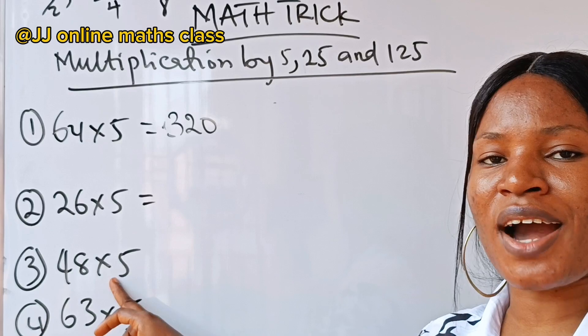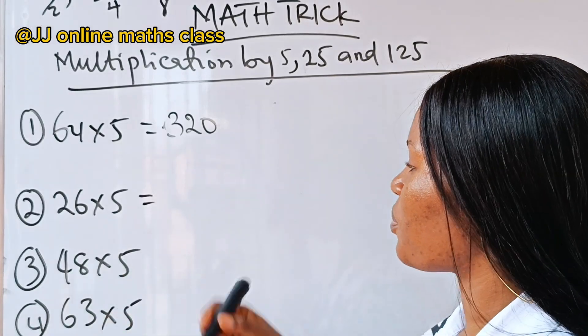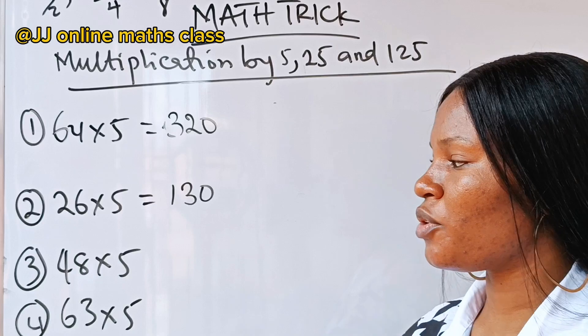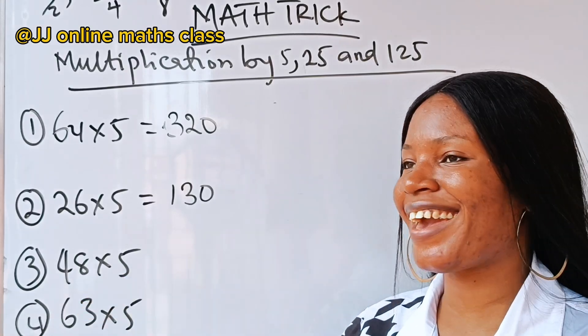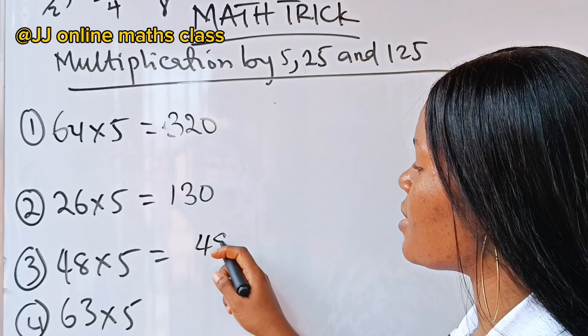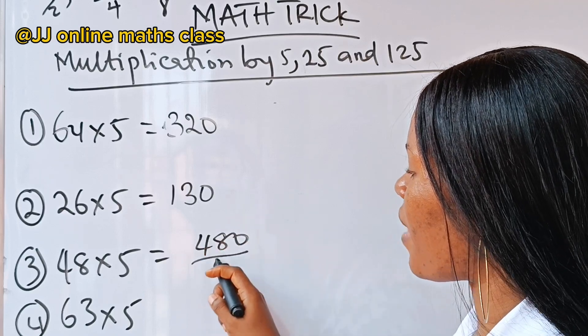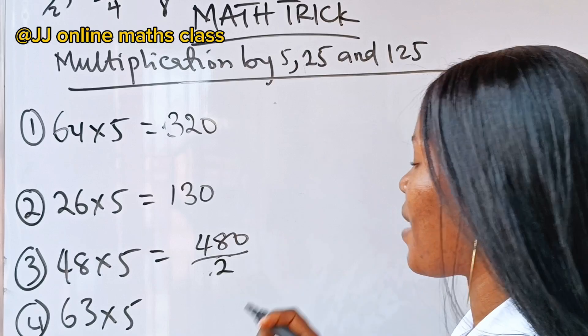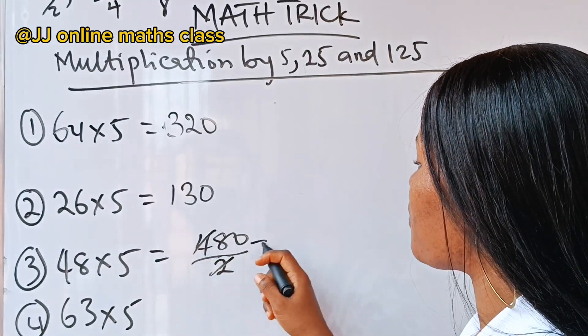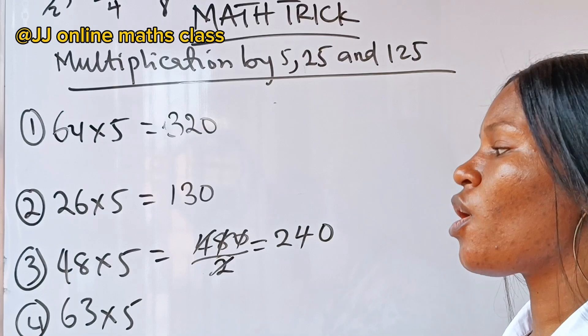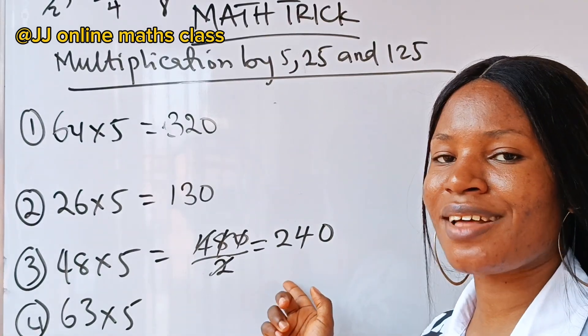Now, can you pause the video and try to get this by yourself? So, we got 130 here. Just try to get this yourself. Now, let's do it together. This is simply 480 divided by 2. When 2 divides 4, you have 2. When you divide 8, you have 4. When you divide 0, you have 0. So, it means that the solution is 240.